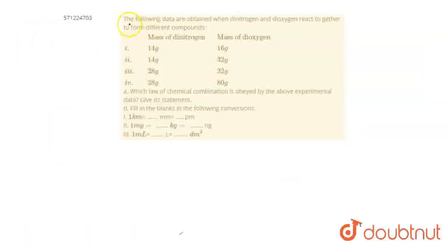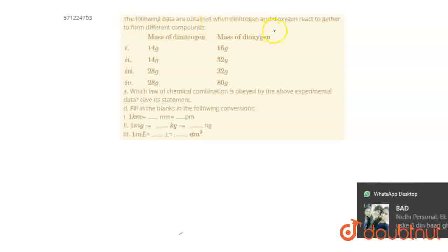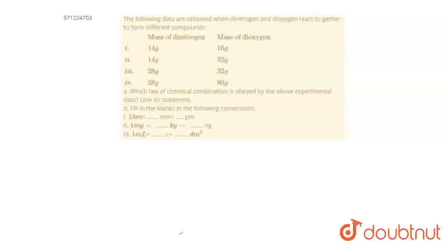Hello students, the question is: the following data are obtained when dinitrogen and dioxygen react together to form different compounds. The mass of dinitrogen and mass of dioxygen are given. Here, firstly we are asked: which law of chemical combination is obeyed by the above experimental data? Give its statement.